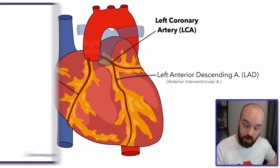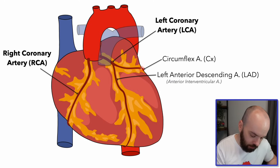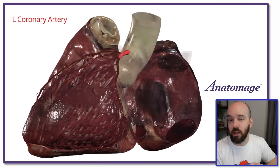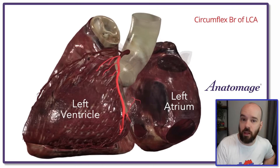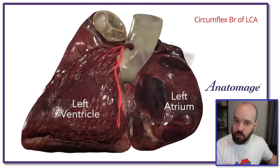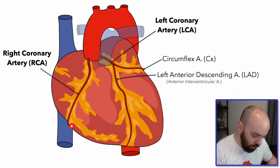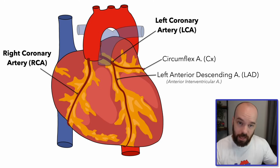The other branch of the left coronary artery is the circumflex artery. "Circum," like circle, tells us it's going to circle around — wrapping around to the posterior side of the heart. Here in the cadaveric images we can see the circumflex artery separating the left atrium from the left ventricle. Of all the arteries drawn, there are three main ones to organize in your mind: the right coronary artery, the left anterior descending artery, and the circumflex artery — because those three visually separate the atria and ventricles from each other. Everything else is a branch of one of those three.